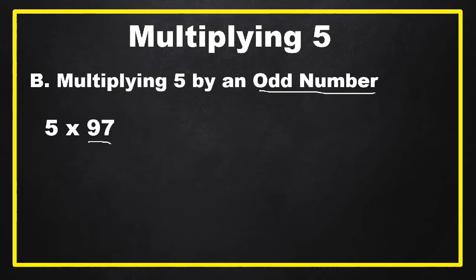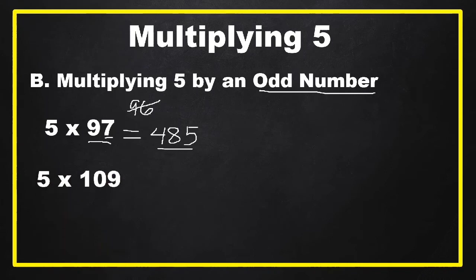To multiply an odd number by five the fast way: first, subtract 1 from 97 to get 96. Then take one half of 96, which is 48. Finally, add 5 to the right side, so our answer is 485.